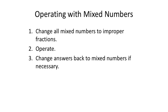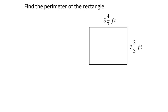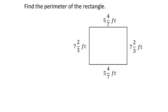Now we'll see applications with mixed numbers. If we have a mixed number, we change it into an improper fraction, perform the needed operation (addition or subtraction), and then change it back into a mixed number at the end. This next problem asks for the perimeter of a rectangle with sides of seven and two-thirds feet and five and four-sevenths feet.